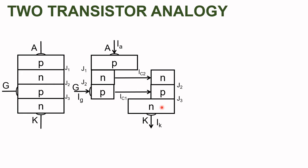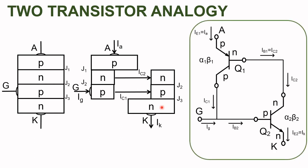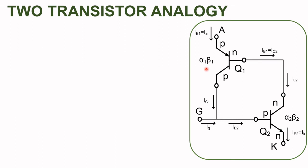If we draw the circuit diagram of this circuit, we can see and verify that the base current for the PNP transistor is the collector current for the NPN transistor. The base current for transistor Q1 is the collector current for transistor Q2. The base current for transistor Q2 is the summation of the gate current and the collector current from transistor Q1.